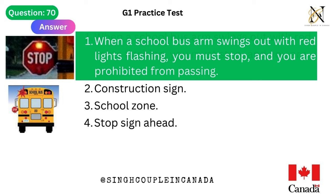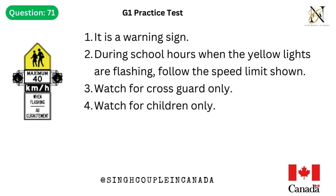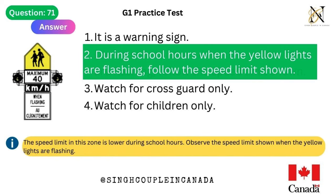Question 71. This traffic sign means: 1. It is a warning sign. 2. During school hours when the yellow lights are flashing, follow the speed limit shown. 3. Watch for cross guard only. 4. Watch for children only. Answer is 2. During school hours when the yellow lights are flashing, follow the speed limit shown. The speed limit in this zone is lower during school hours — observe the speed limit shown when the yellow lights are flashing.